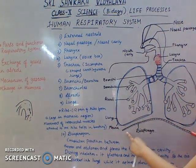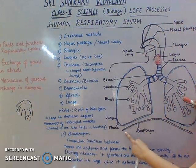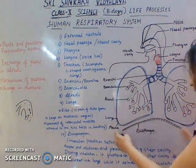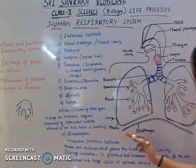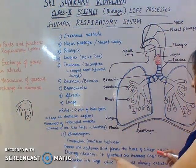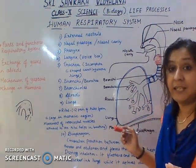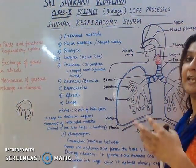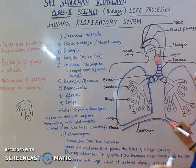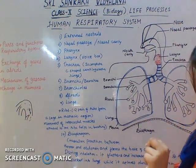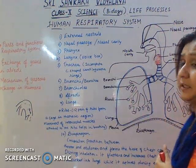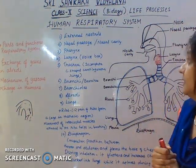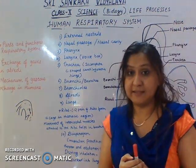The last part is the diaphragm. The diaphragm is a muscular partition between the thorax and the abdomen, forming the base of the chest cavity. During inhalation, it flattens and increases the chest cavity — you can observe this yourself by inhaling and noticing your chest expand. During exhalation, the diaphragm relaxes. These are all the respiratory organs associated with the human respiratory system. Next, we will discuss the exchange of gases in alveoli.